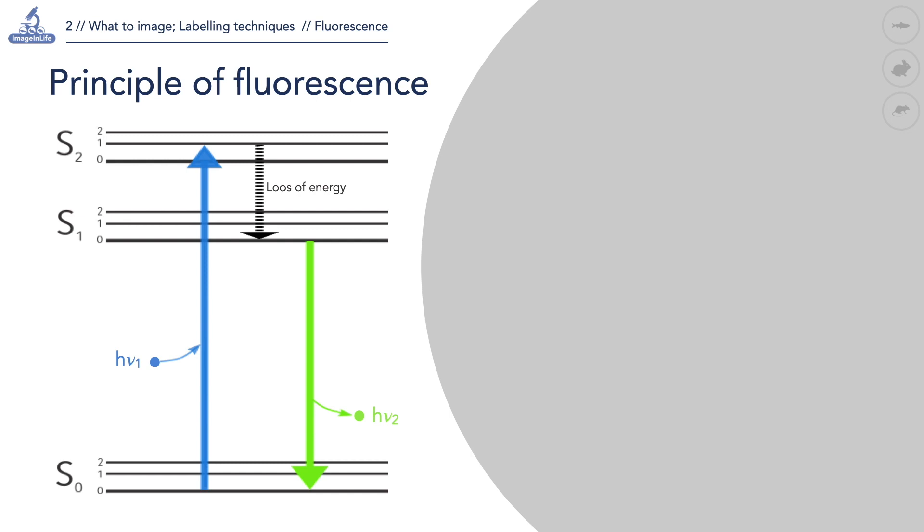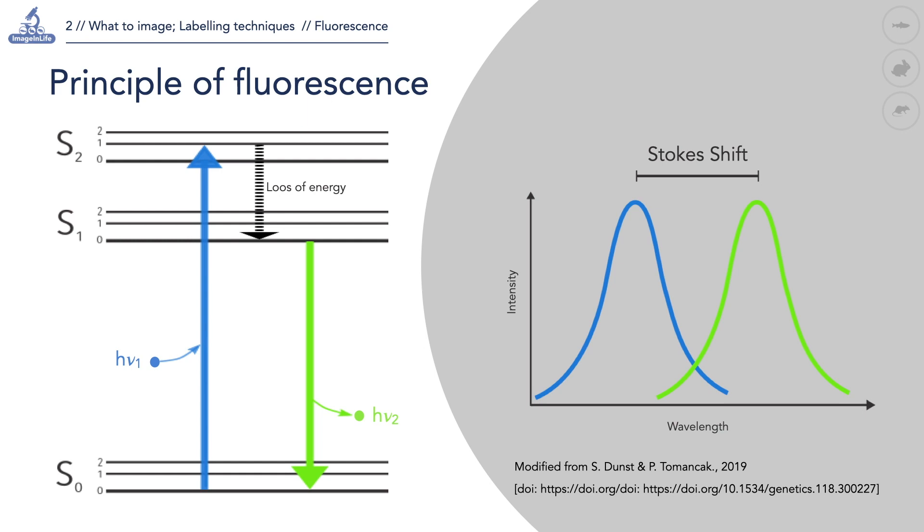The shift between excitation and emission wavelength is the Stokes shift. The Stokes shift is particularly important when it comes to imaging biological structures. The larger the shift,